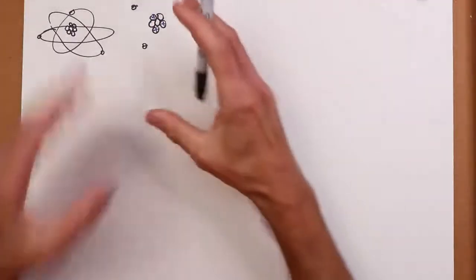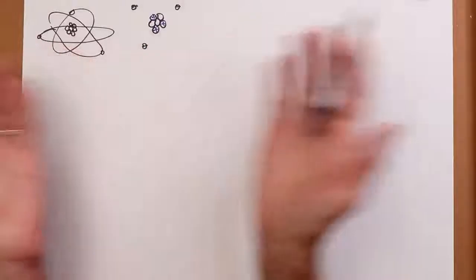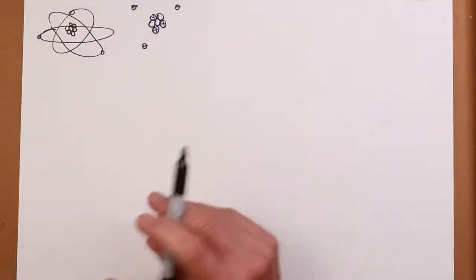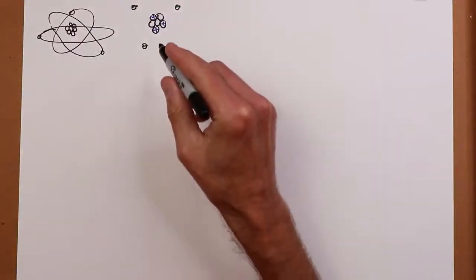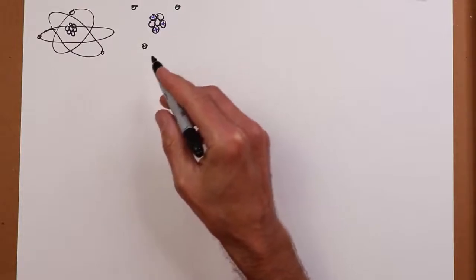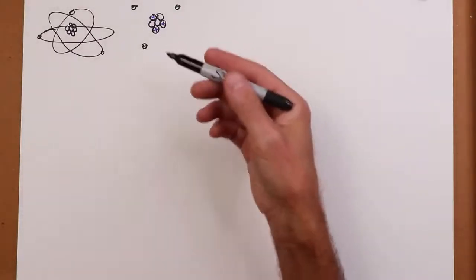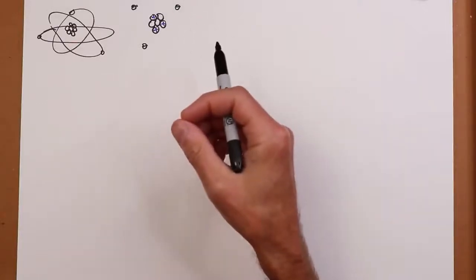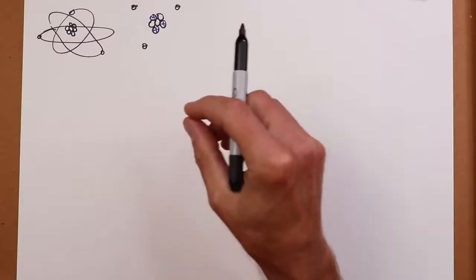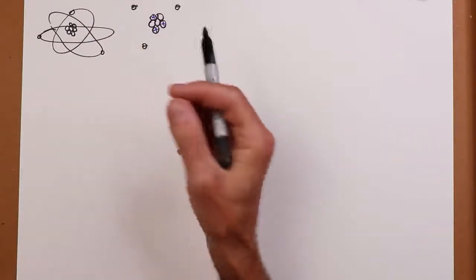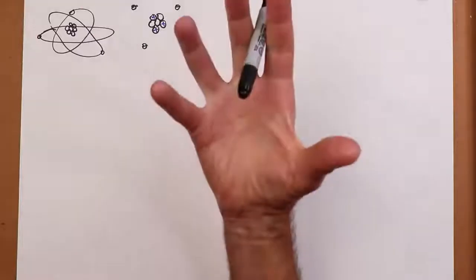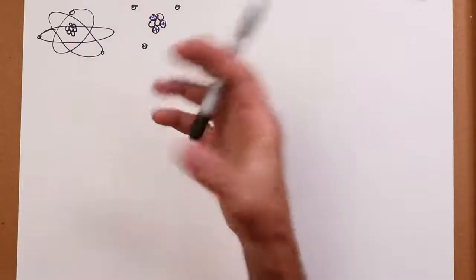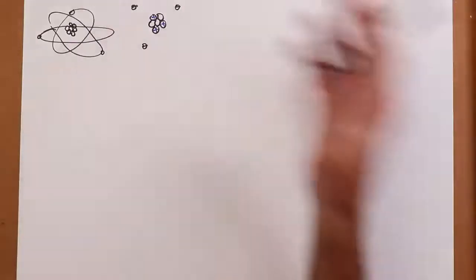Now, what about the sort of relative scale of these things? To be honest, you can't really draw it. You can't draw this thing to scale. The mass of a proton or neutron is on the order of 10 to the minus 24 grams. It's crazy, crazy small. There are more molecules of water in a glass of water than there are glasses of water in all the oceans on the planet.